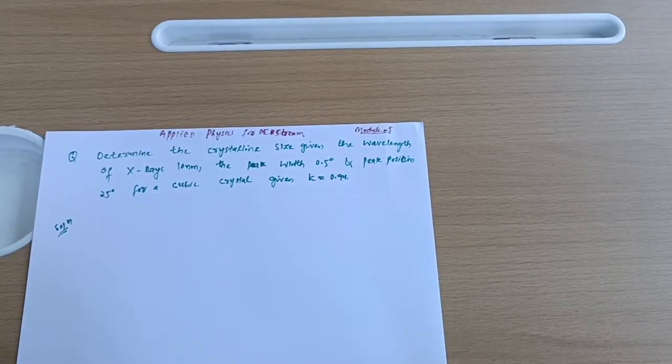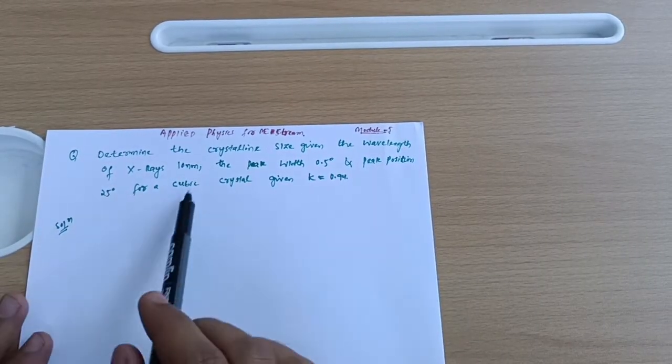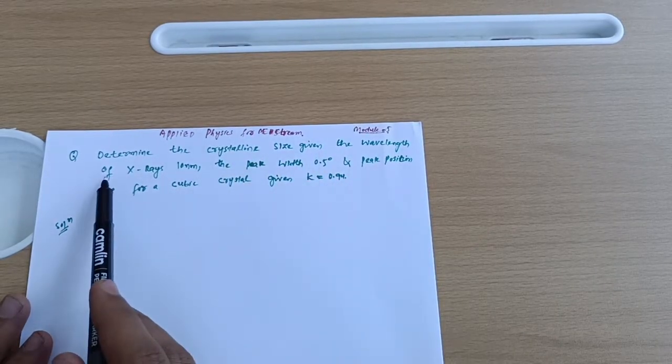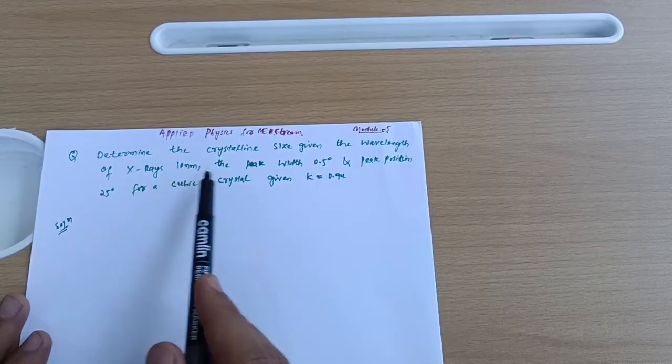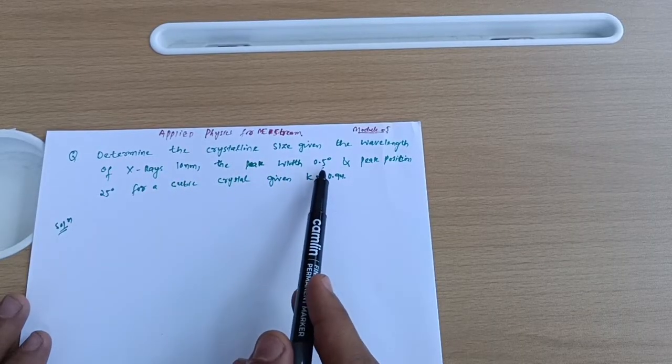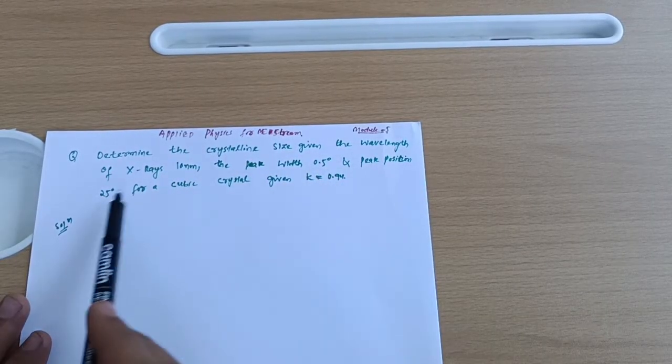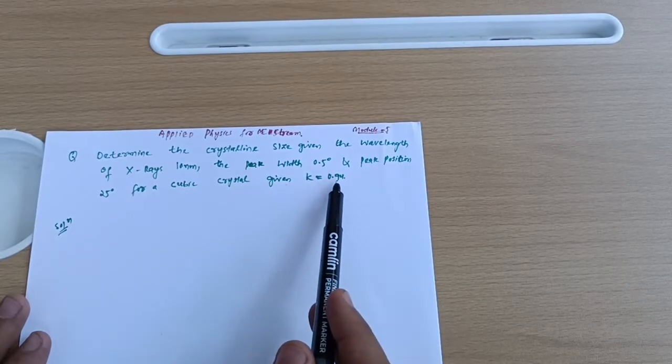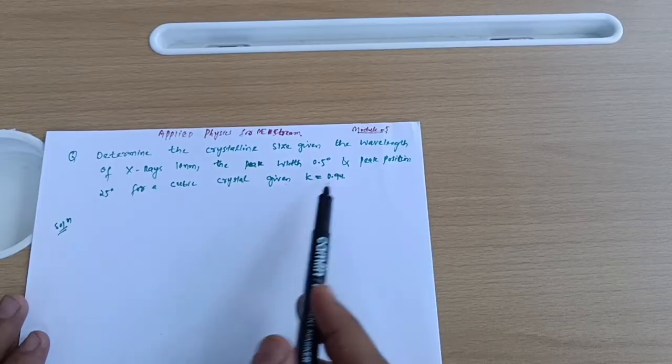The problem: Determine the crystalline size given the wavelength of X-rays is 10 nanometers, the peak width equals 0.5 degrees, and the peak position equals 25 degrees for a cubic crystal. Given K equals 0.94. This K is called Scherrer's constant.